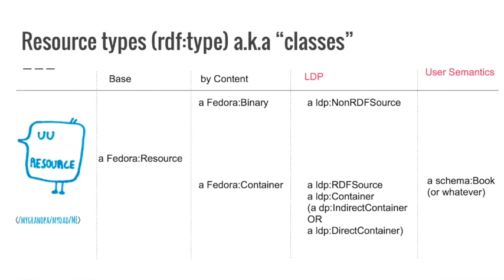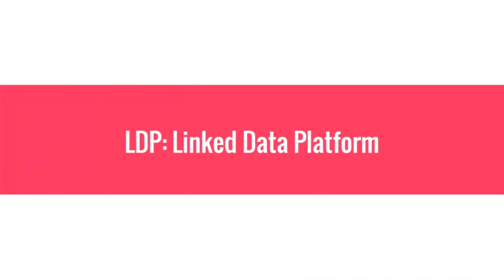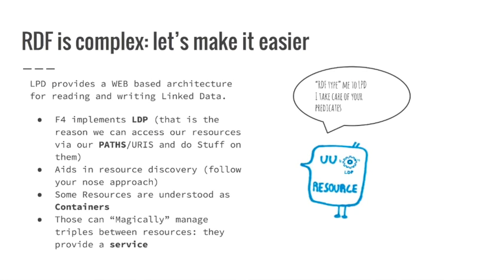This is how our resource looks like inside — naked. With this notion, we have different types of resources on Fedora, and they have different types of meanings. Every resource is of type Fedora resource. Then, depending on what content we put inside, it can be a Fedora binary or a Fedora container. On another layer, there's something named LDP. In LDP, if it's binary, it can be an LDP non-RDF source. If it's RDF and has metadata inside, it's an LDP RDF source. Then we can keep extending this using user semantics — we can put schema:Book or whatever other ontology defines something we want to denote for this resource.